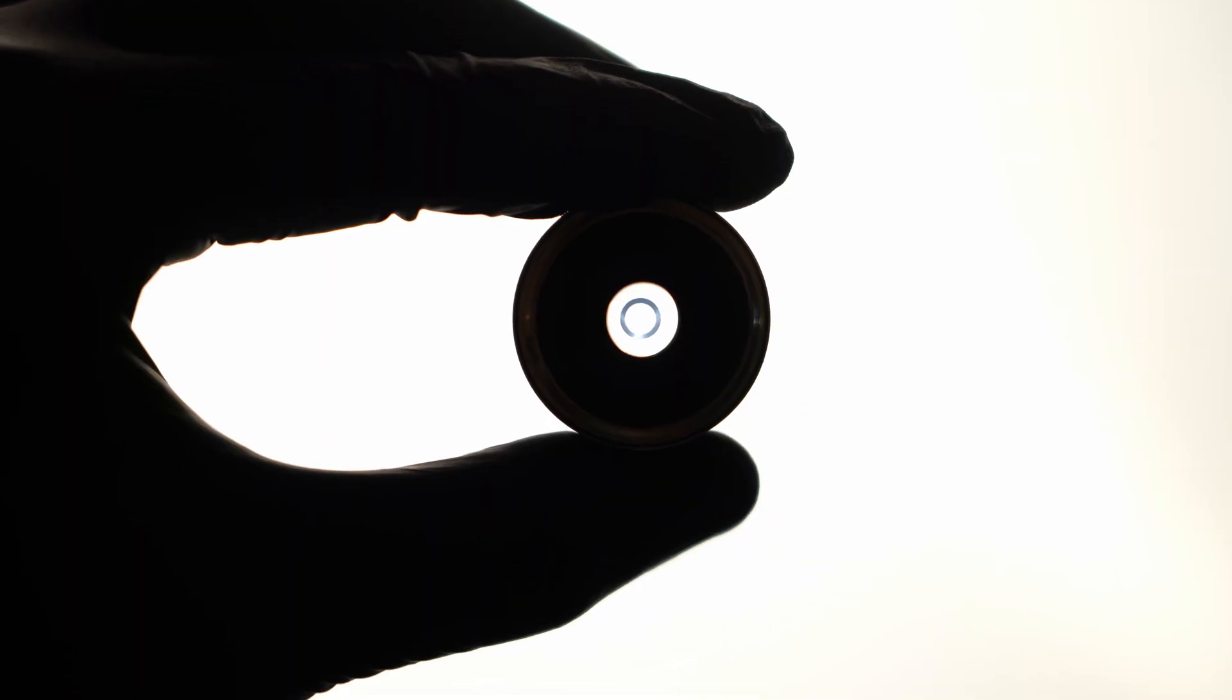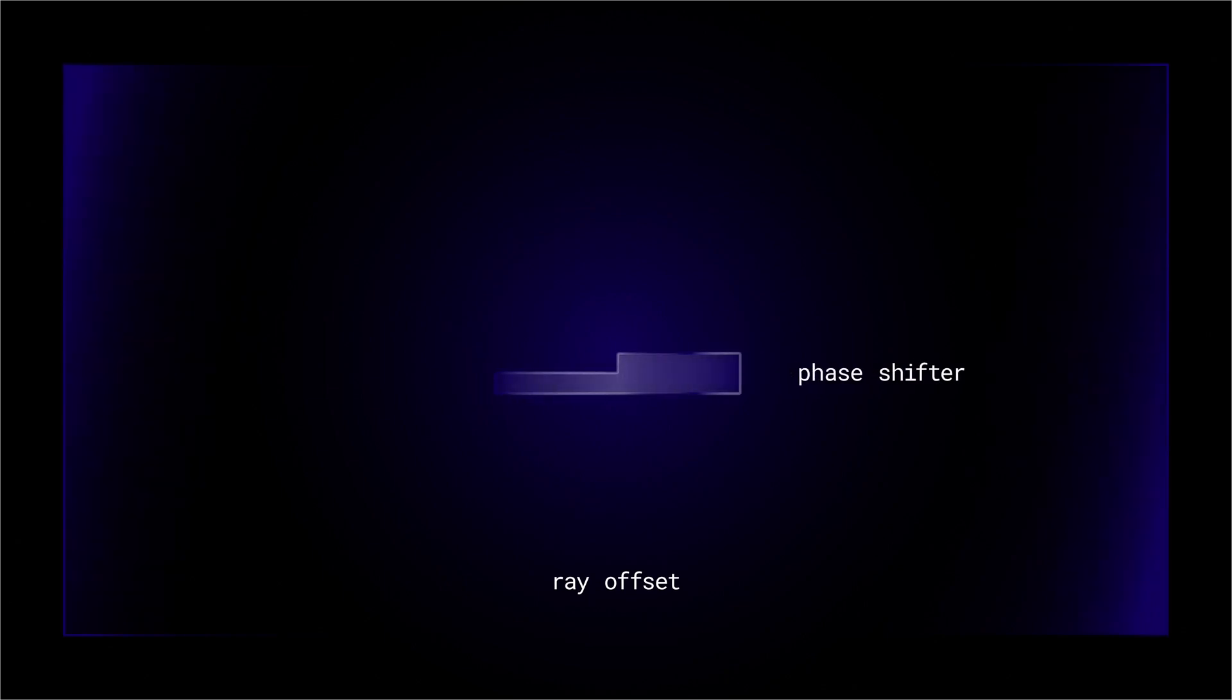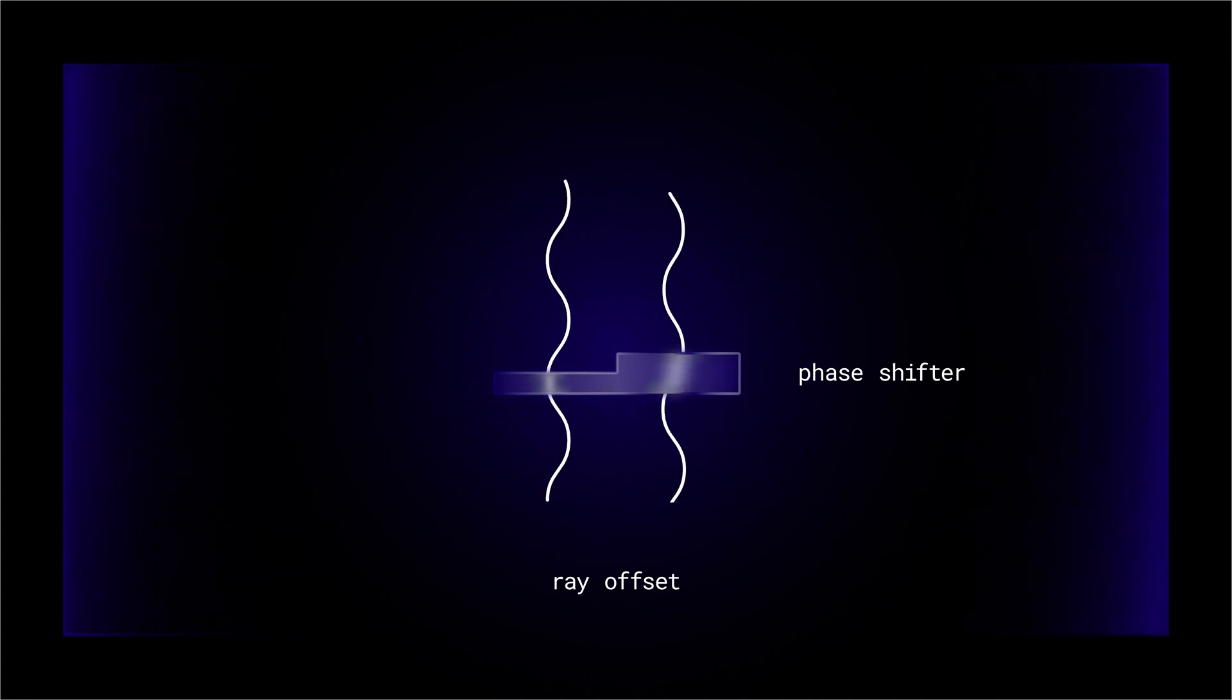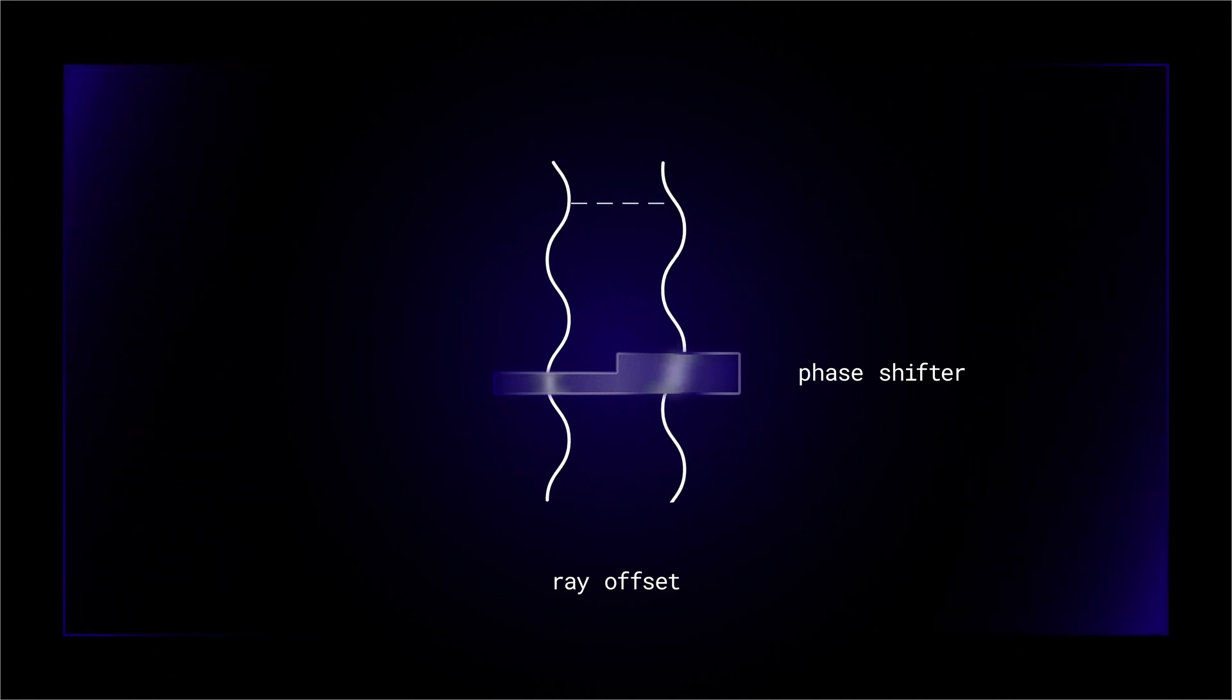To speed up the direct undeviated zeroth order light we need the phase shifter in the back focal plane of the objective. Phase shifter is a plate with narrow area optically thinner than the rest of the plate. As a result we have background light shift for a quarter wavelength which in total gives the difference of half a wavelength between diffracted and zeroth order light in an image plane.